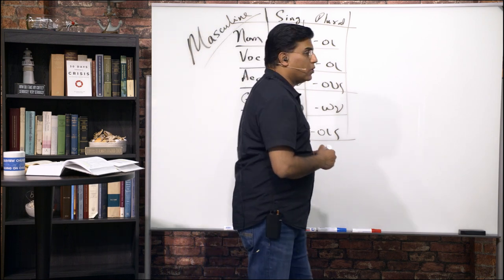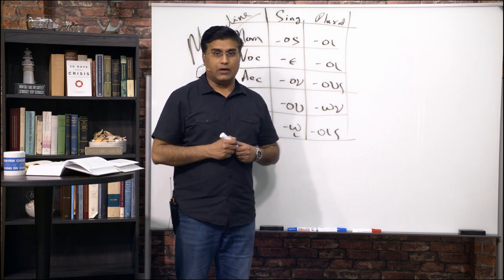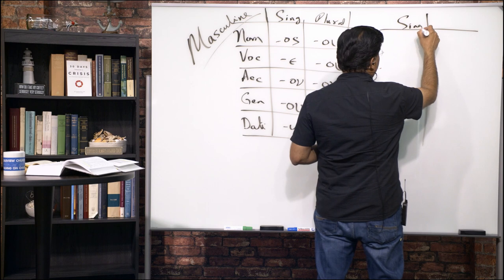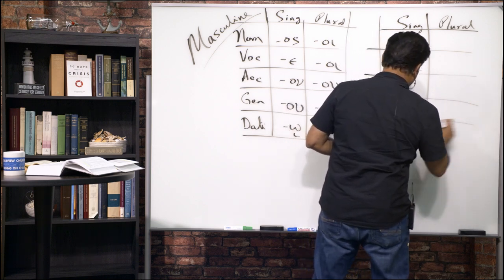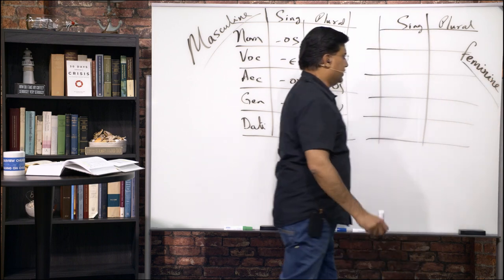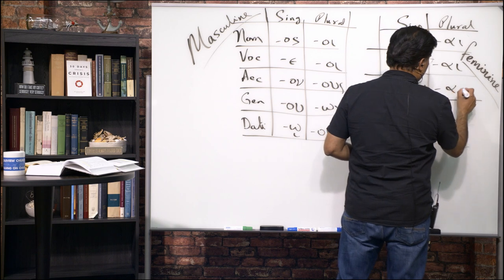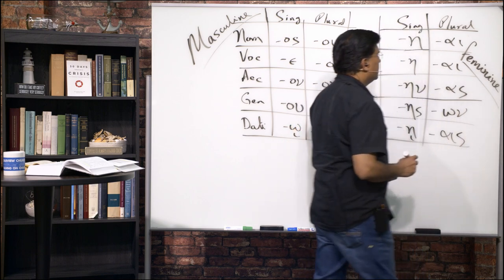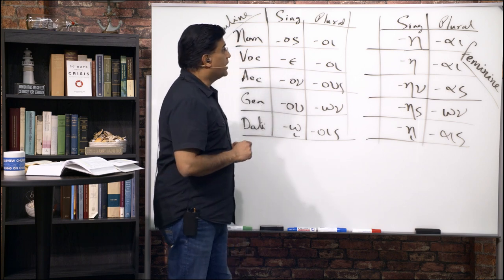For the feminine, we go to the A endings — remember in the first declension, A endings. The feminine endings are: singular — nominative a, vocative a, accusative an, genitive ēs, dative ē; plural — nominative ai, vocative ai, accusative as, genitive ōn, dative ais. That is your feminine ending for these first/second declension adjectives.